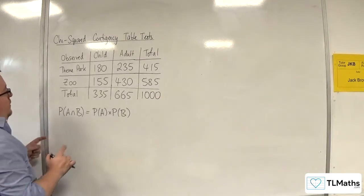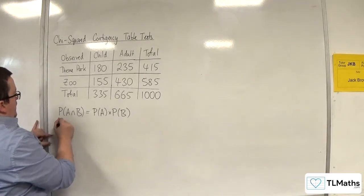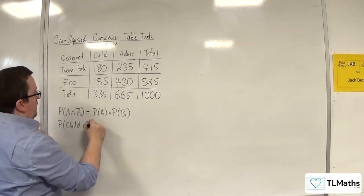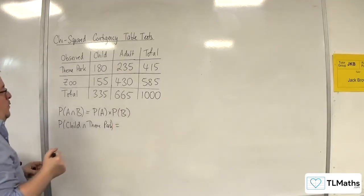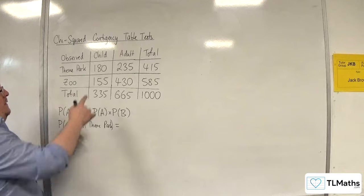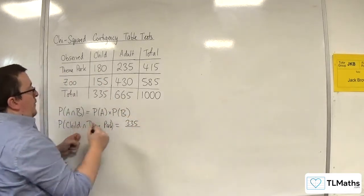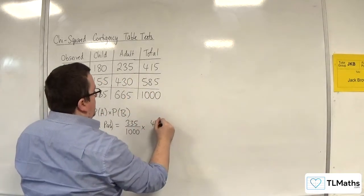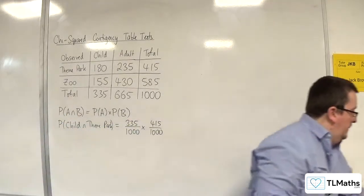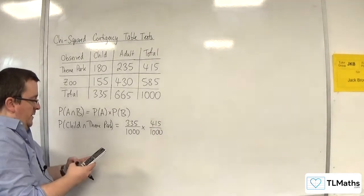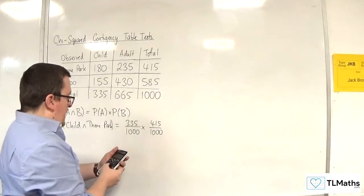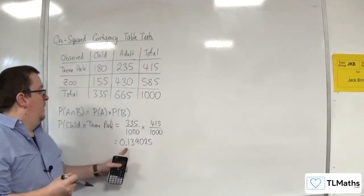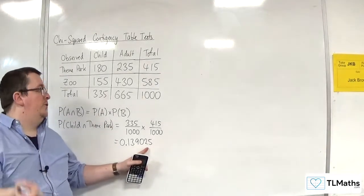So the probability of, let's say, a child having a ticket to go to the theme park, would be equal to the probability of being a child ticket. And there are 335 child tickets out of 1000, times by the probability of going to the theme park, and there's 415 out of 1000 for that. So 335 times 415 divided by 1000 squared would be, so that's 0.139025. So that is the probability of picking at random a child who has a ticket for the theme park.